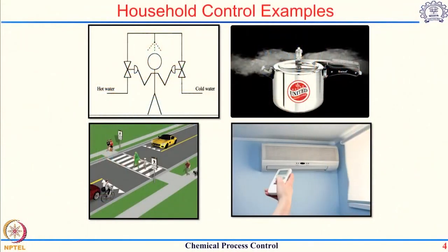Lastly, all of us have an air conditioner at home. The job of the air conditioner is to maintain the temperature which we set through its remote. If we set a particular feel-good temperature for the room, it is the job of the air conditioner to maintain that temperature irrespective of the outside temperature or how many people are inside the house. In a way, it tries to maintain that temperature by manipulating its operation.